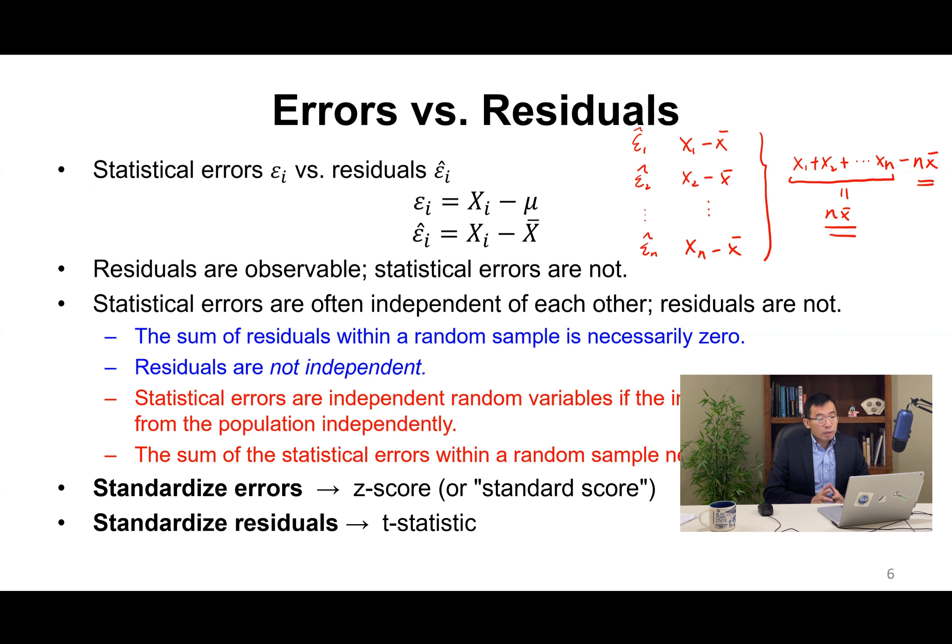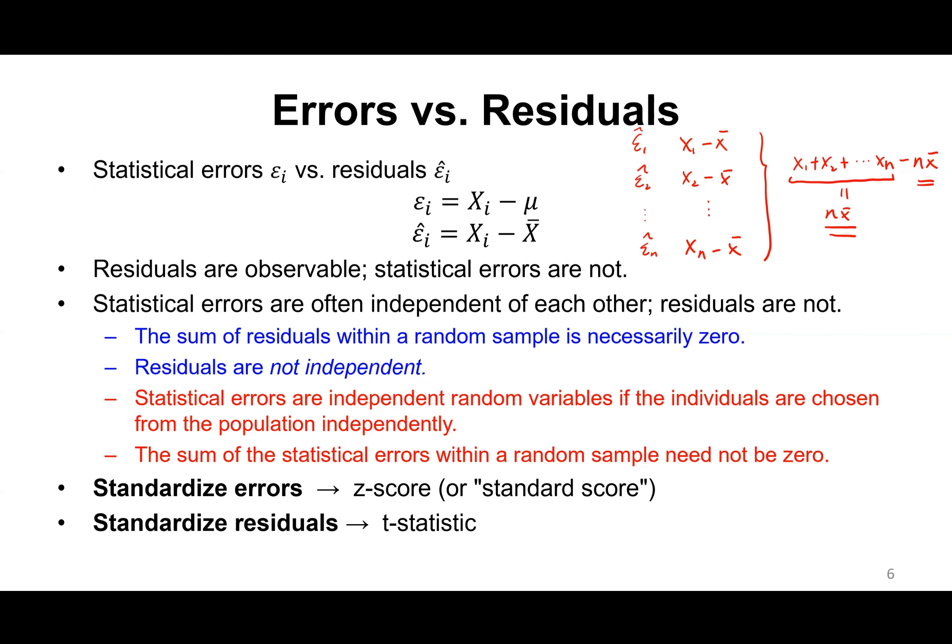In this way, residuals are not independent, but statistical errors are independent random variables if the individuals are chosen from the population independently. The sum of the statistical errors within a random sample does not equal zero, because if you change this to mu, n x bar not necessarily equals n mu. This is why the sum of statistical errors within a random sample does not equal zero.